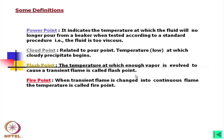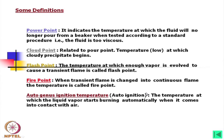Next to that, if you apply more heat, you will reach the fire point — when the transient flame is changed into a continuous flame, that temperature is called the fire point. At the fire point the flame is on the oil's top surface, but still the whole oil has not caught fire.